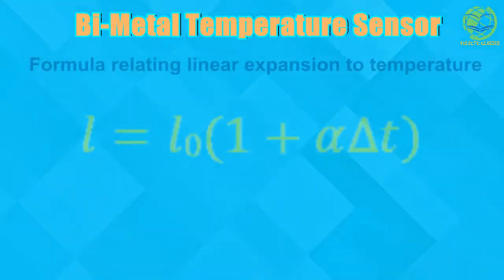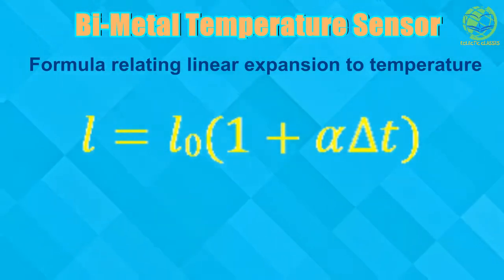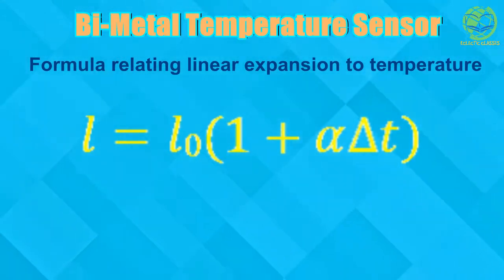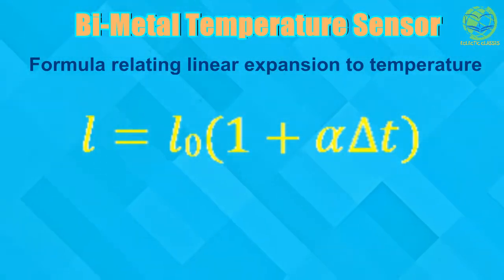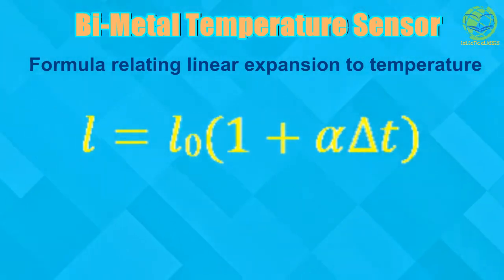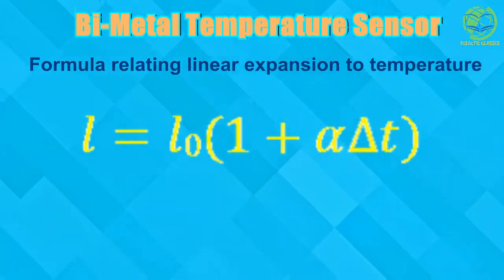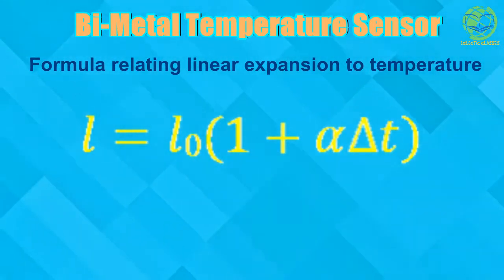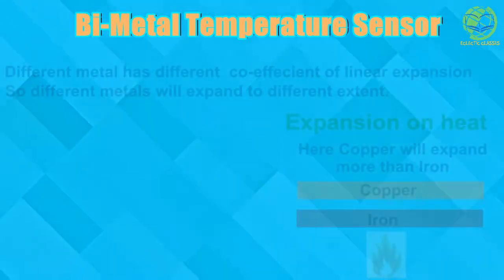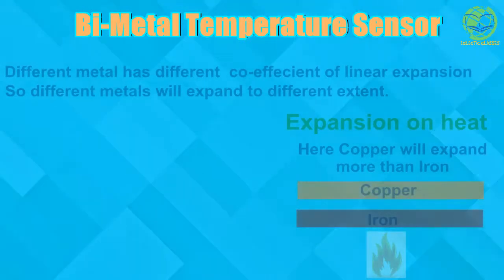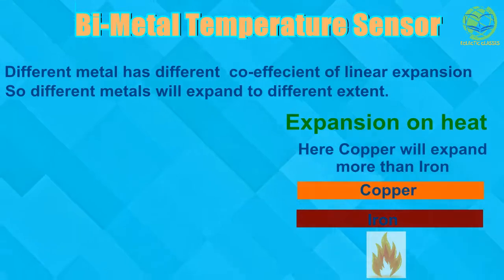Mathematically, the expansion can be represented by the formula: L = L₀ × (1 + α·ΔT), where L is the length of material after expansion, L₀ is the initial length before expansion, α is the linear coefficient of expansion of the material, and ΔT is the change in temperature. Different metals have different coefficients of linear expansion, so with the same temperature change, different metals will expand to different extents.